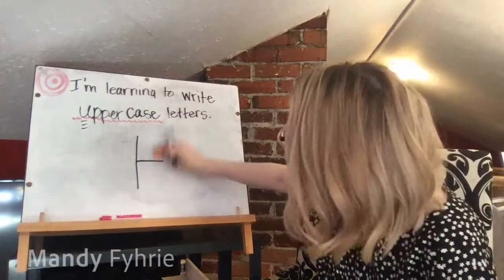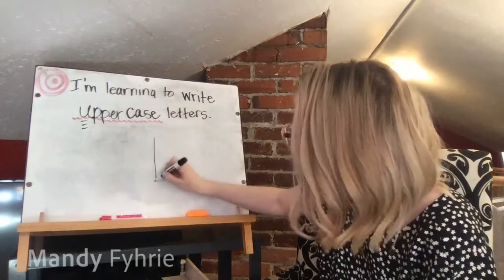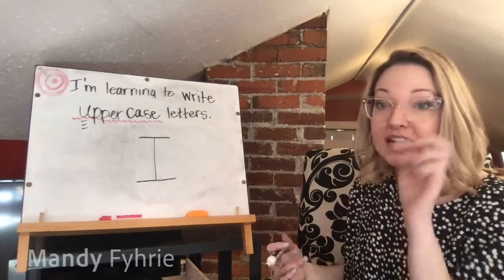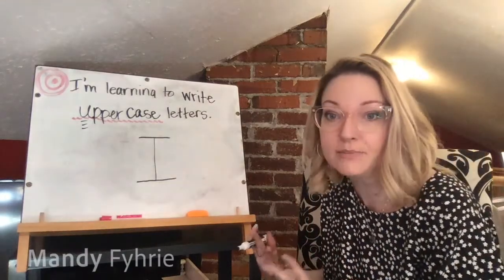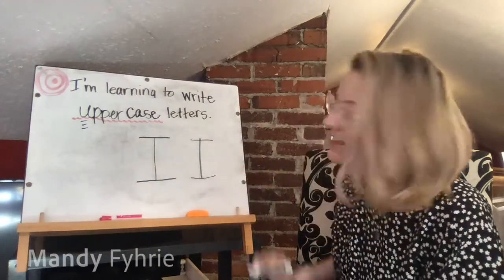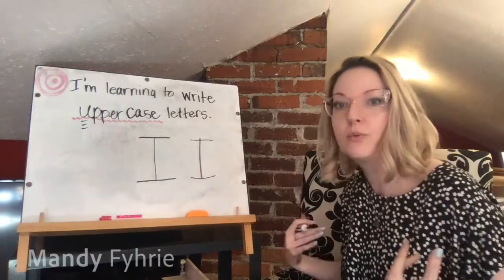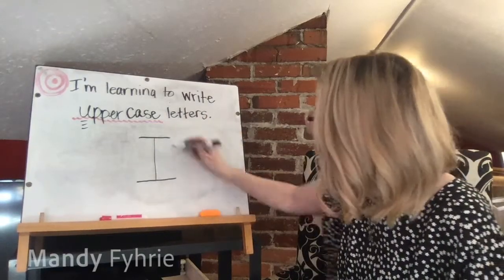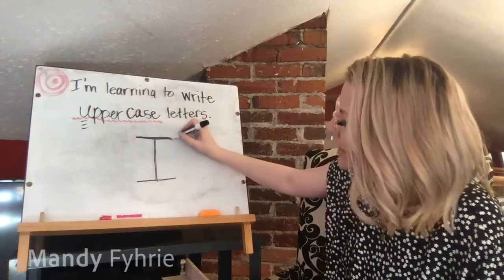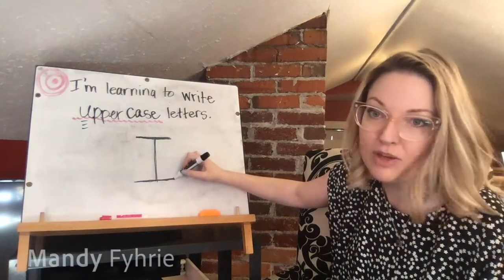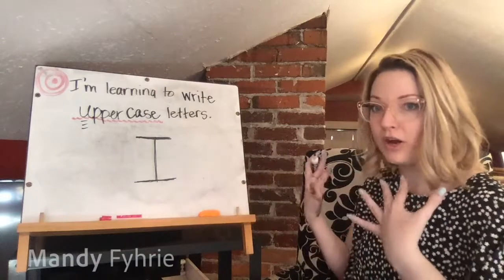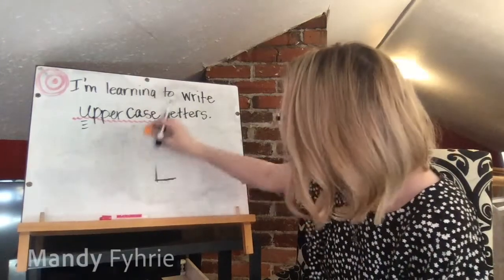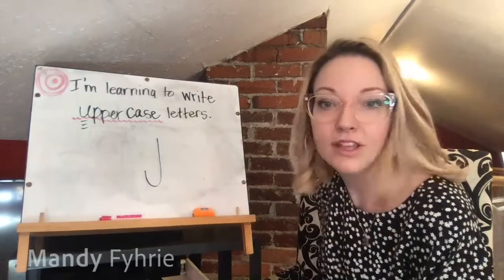Capital I: big line down, hop to the top, little line across, down to the bottom, little line across. A common mistake is going backwards after the big line down — remember, when you're writing you're always moving forward from left to right. Start on the left with your top line, move it forward; then the bottom line, start left and move it forward.